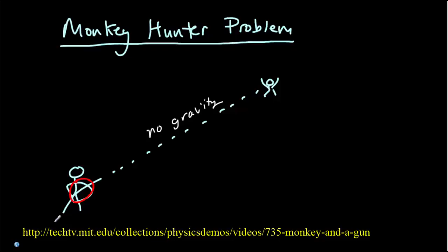So what's going on there? Both objects were released at exactly the same time, so they both fall the same distance from the no gravity line. The monkey falls straight down, whereas the arrow takes a parabolic path, but it still falls the same distance from the no gravity line as the monkey, because they're both in the air for the same amount of time.